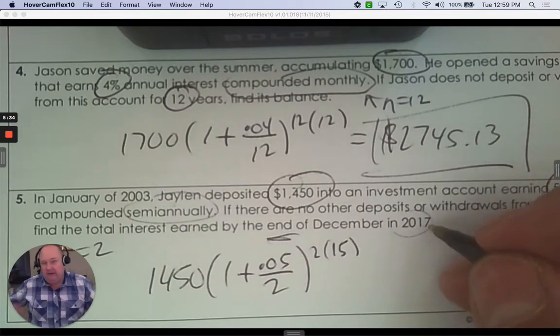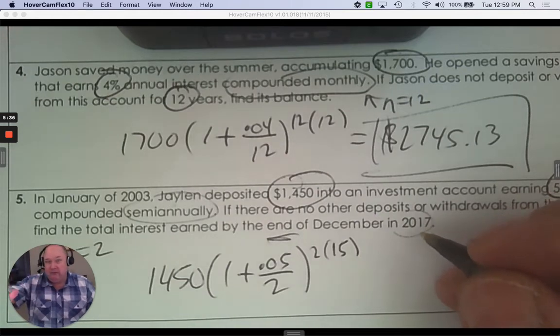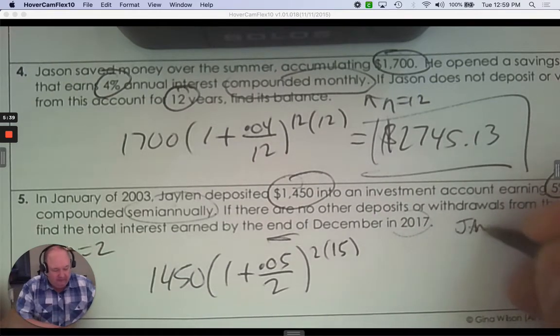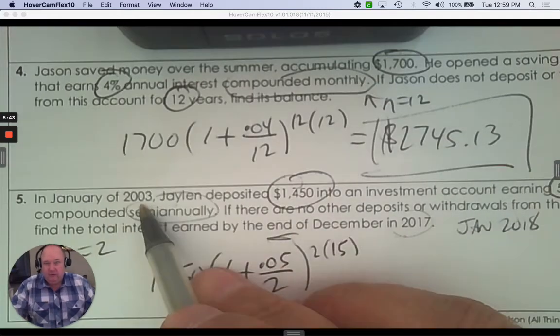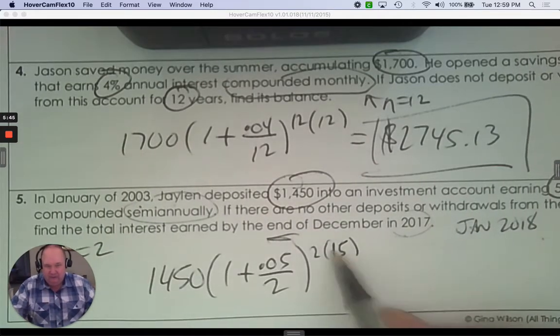Because it's almost like it says 2018, right? If we go from January to January 2018, because it's to the end of 2017. So 2003 to 2018, that's where the 15 comes from.